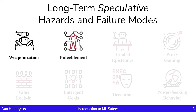Another concern is enfeeblement. Enfeeblement can occur if know-how erodes by delegating increasingly many important functions to machines. In this situation, humanity loses the ability to self-govern and becomes completely dependent on machines, not unlike scenarios in the film WALL-E. Similarly, eroded epistemics would mean that humanity would have a reduction in rationality due to a deluge of misinformation, or there could be highly persuasive, manipulative AI systems.